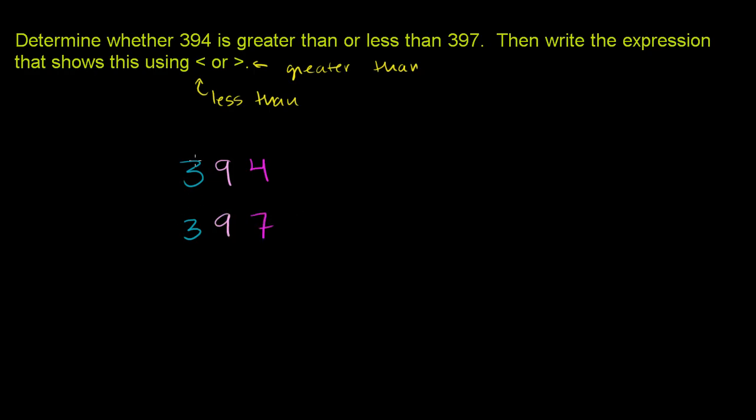Now, they both have 300s, so their hundreds places are equivalent. They both have 90, with that 9 there. But this is 300 plus 90 plus 4, and this is 300 plus 90 plus 7. And we know that 4 is less than 7.